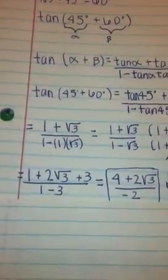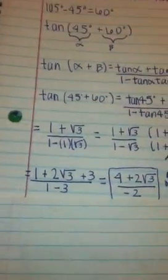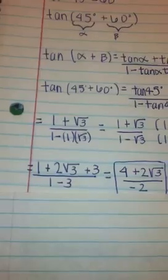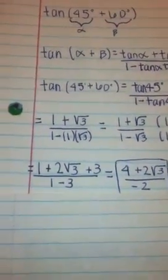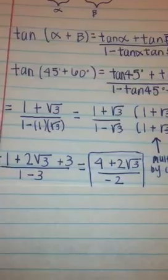When we do this, we're going to FOIL and we get 1 plus 2 square root 3 plus 3 all over 1 minus 3. On the bottom, the square roots canceled, which is what we wanted. So the answer is 4 plus 2 square root 3 over negative 2.